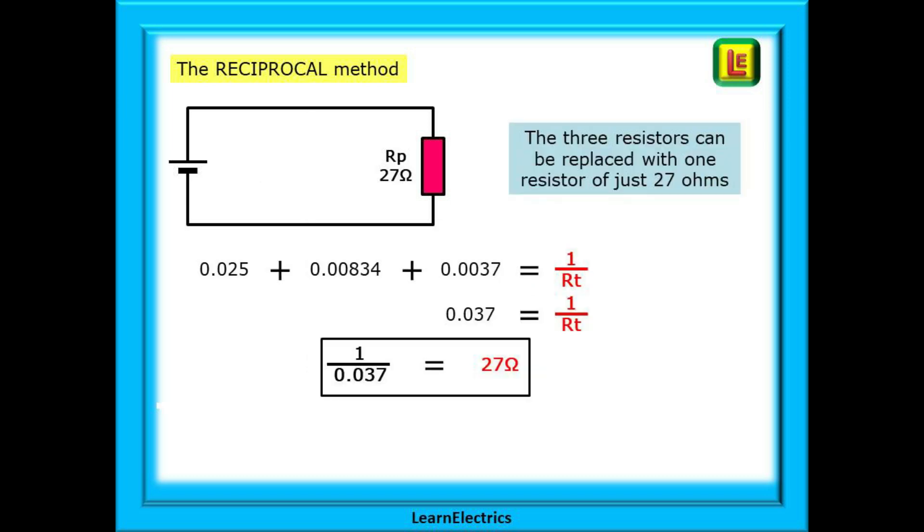1 divided by 40 is 0.025—write it down. 1 divided by 120 is 0.008333 forever more, so we need to chop off the end bit. The same with the 270 ohm resistor—chop off the end digits after calculation. Now add all three of them together and we have 0.037. Note that this is not the answer, not yet. This is only half way. We now need to divide this 0.037 into 1 to get RT. 1 divided by 0.037 is 27.027, etc. This slight difference is because we've chopped off some of the long numbers after the decimal point, but this is close enough to call it 27 ohms, and those tiny differences don't matter.